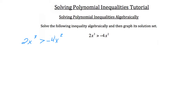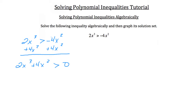Because it's an inequality, I want to get everything over to one side and set it equal to zero. So I'm going to add 4x squared to both sides. This is usually a good strategy when dealing with cubic or quadratic expressions — anything with an exponent greater than 1. We've got 2x cubed plus 4x squared is greater than zero. Now I'm going to divide everything by 2, giving us x cubed plus 2x squared is greater than zero.